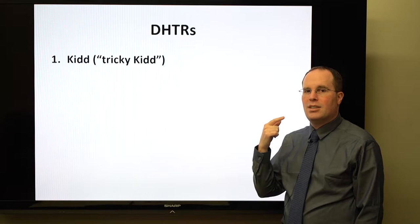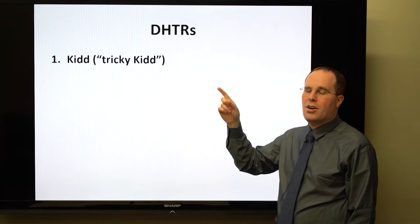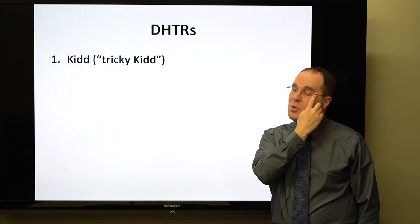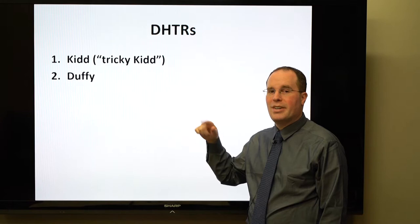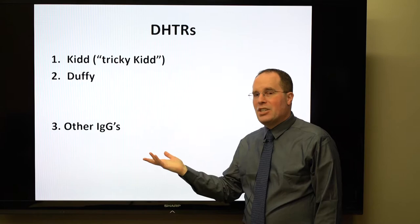Regarding delayed hemolytic transfusion reactions: Kidd antibodies are notorious for dipping below the limit of detection — they top the list of antibodies that do this. Duffy antibodies are second on that list. Of course, any IgG can potentially cause delayed hemolytic reactions.